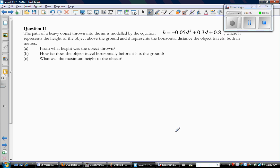Here's that question. It says the path of a heavy object thrown into the air is modeled by this equation. So this equation is obviously quadratic. There's a squared and no other higher exponent, and it's given to me in standard form. So in this equation, h represents the height of the object above the ground, and d represents the horizontal distance that the object travels, both in meters. Before I actually look at what I'm supposed to do with this relationship, I like to make sure that I understand it clearly.